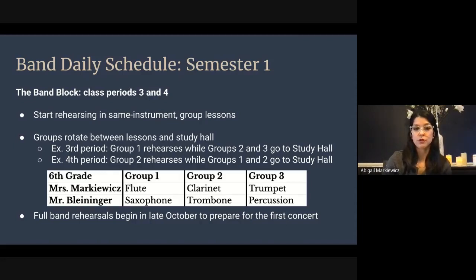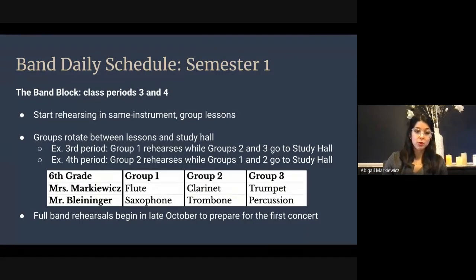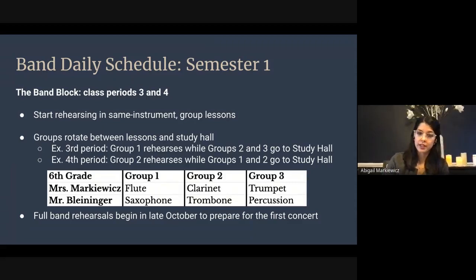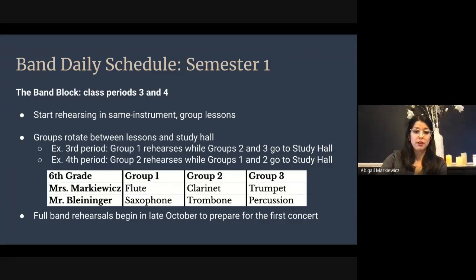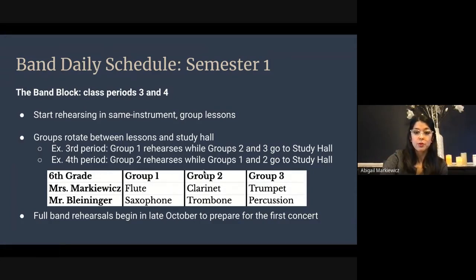The co-academics for sixth graders fall during class periods three and four, and we teach through both of those classes. When we start the school year, students won't actually play for both classes — we split everybody up into similar instrument groups. All the flutes play together, all the clarinets, trumpet, saxophone, trombone, and percussion rehearse separately. On this slide you can see the schedule we operated with this year. Group one would be flute and saxophone players, group two clarinet and trombone, and group three students would be trumpet and percussion.